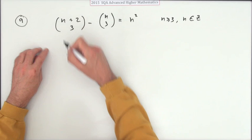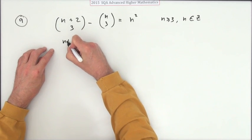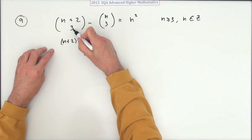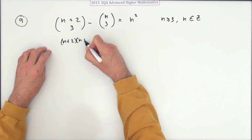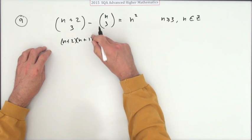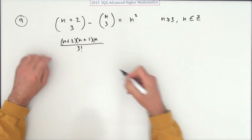Well the actual definition of that is n plus 2, how many combinations are there of 3 from n plus 2 objects? It'll be n plus 2 times n plus 1 times just n, divided by 3 factorial.